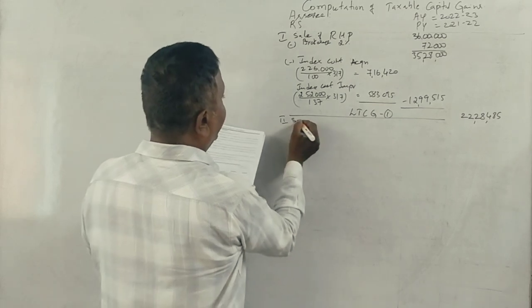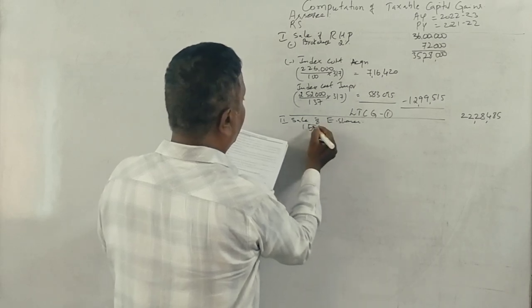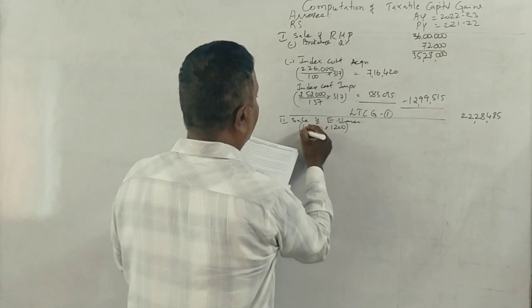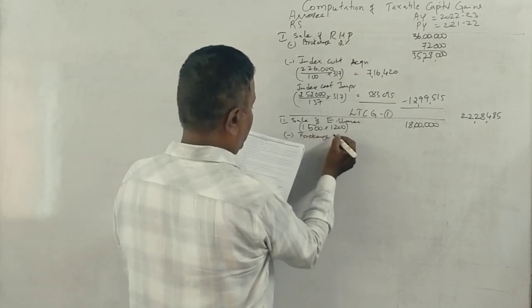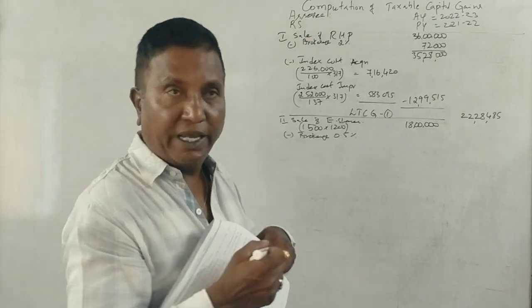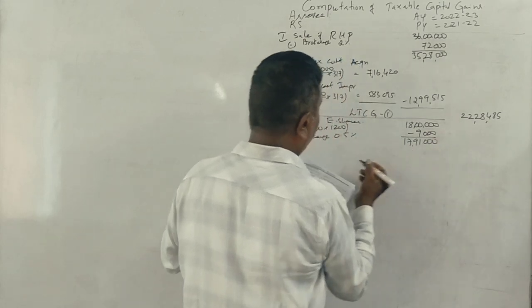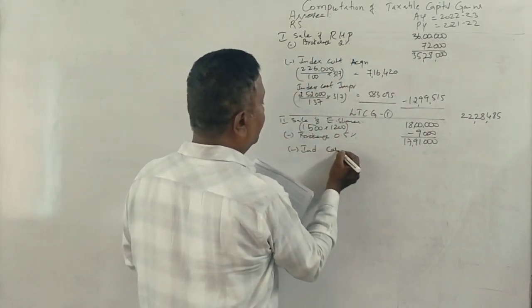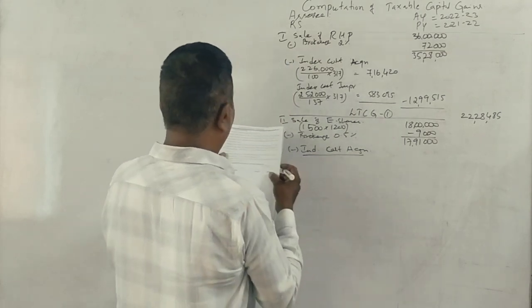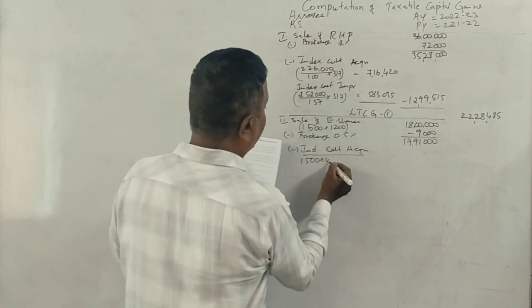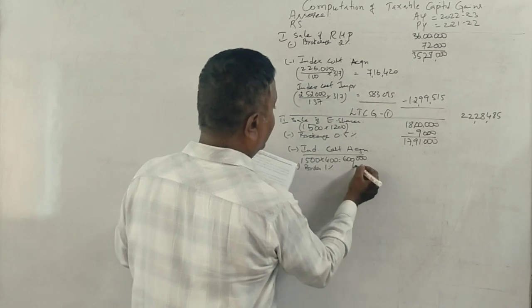Next, sale of equity shares: 1,500 shares multiplied by 1,200 equals 18 lakhs. Less brokerage at 0.5% is 9,000, giving 17,91,000. Less indexed cost of acquisition: 1,500 multiplied by 400 equals 6 lakhs, plus commission brokerage at 1% is 6,000, totaling 6,06,000.